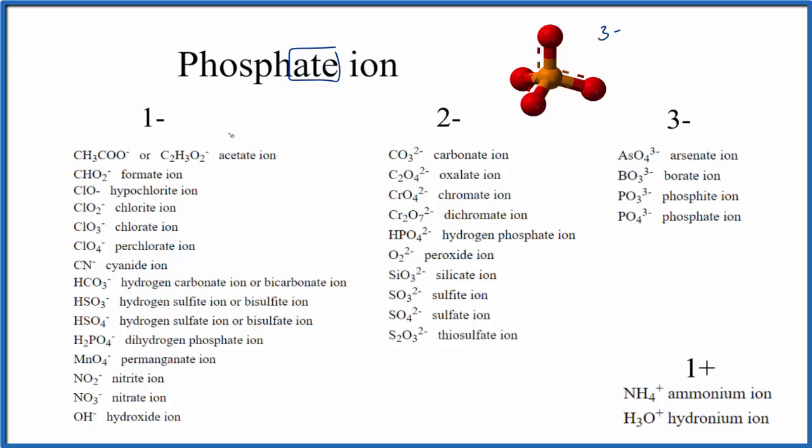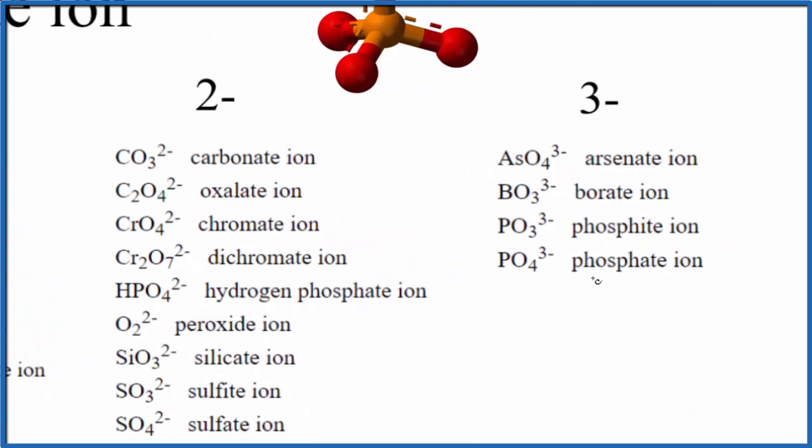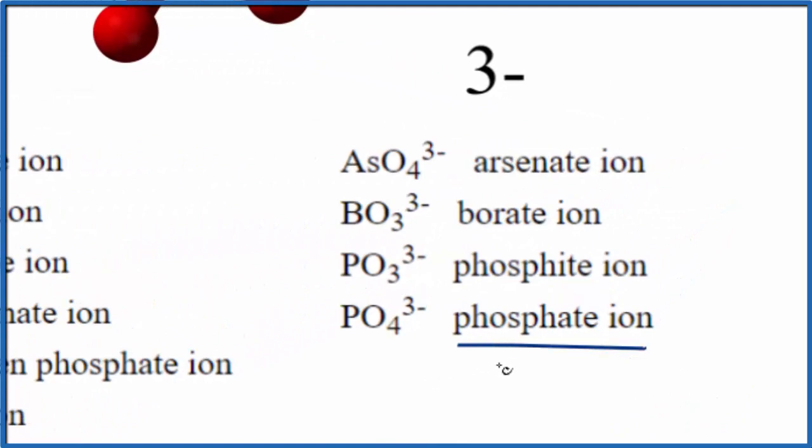You're not going to find this on the periodic table, so you've either memorized that the phosphate ion is PO4 3- or if you're allowed you look it up on a table of common polyatomic ions. So we have our table here and we look for the phosphate ion, and right here phosphate ion PO4 3-.